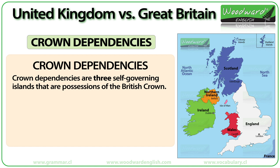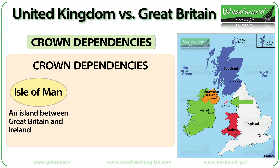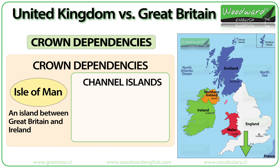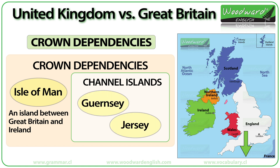What are the Crown Dependencies? Crown Dependencies are three self-governing islands that are possessions of the British Crown. These three islands are the Isle of Man, which is an island between Great Britain and Ireland, and the Channel Islands of Guernsey and Jersey. These are near the coast of France. Since these three are independently administered jurisdictions, they are not considered a part of the United Kingdom.